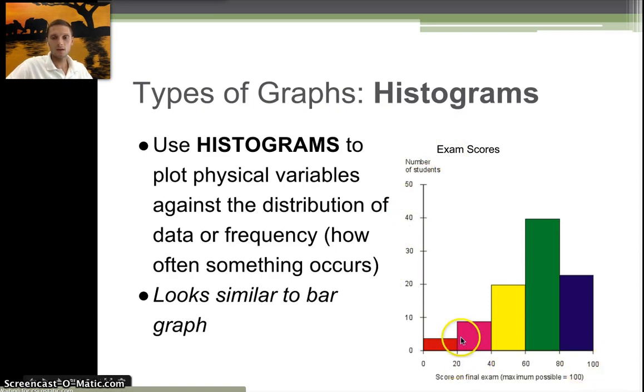In this case, we're looking at exam scores. Here's our number of students, this is the score on the final exam, and this is showing us how many students scored differently on the exam. How many students scored between 60 and 80 out of 100? We can see that's about 40. How many students scored between 80 and 100? We can see that's about 20. So we have a continuous distribution or showing of how often the results occurred in this situation, which happens to be the number of students per exam score.